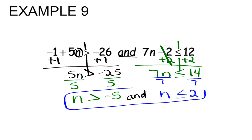Here is our final answer. If we were to graph this on a number line, we would have negative 5 and positive 2. Negative 5 would be an open dot. Positive 2 would be a closed dot because of the equal to bar.